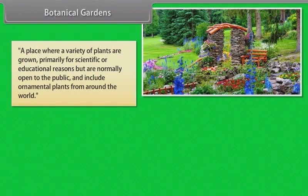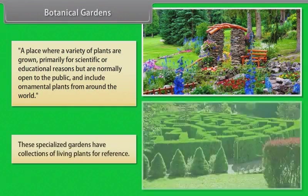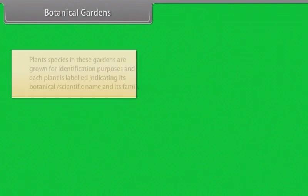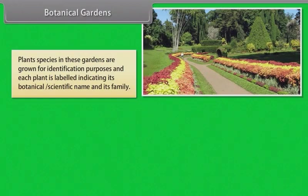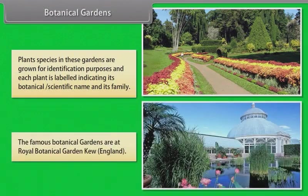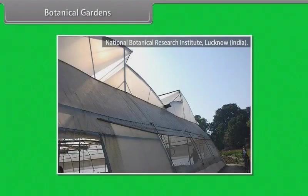A botanical garden is a place where a variety of plants are grown, primarily for scientific or educational reasons, but normally open to the public. They include ornamental plants from around the world. Each plant is labeled indicating its botanical scientific name and its family. Famous botanical gardens include the Royal Botanical Garden at Kew, England, and the Indian Botanical Research Institute, Lucknow, India.